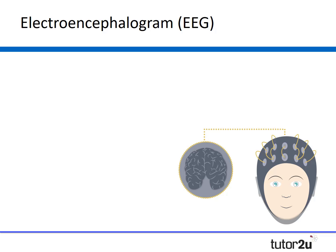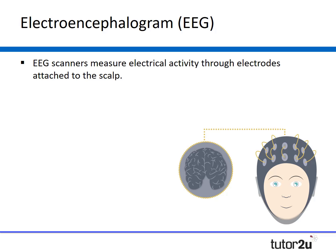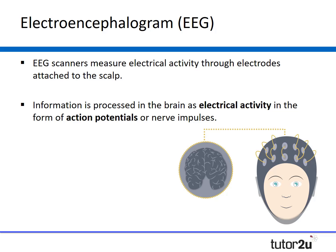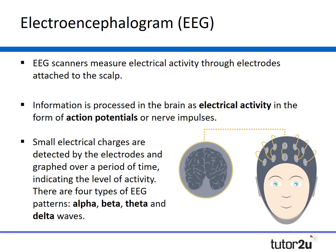The second way of studying the brain is EEG, which stands for electroencephalogram. EEG scanners measure electrical activity via electrodes attached to the scalp. EEG works on the premise that information is processed in the brain as electrical activity in the form of action potentials or nerve impulses transmitted along neurons. Small electrical charges detected by the electrodes are graphed over time and indicate the level of activity in the brain. There are four types of EEG patterns: alpha waves, beta waves, theta waves, and delta waves.